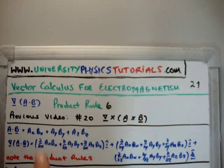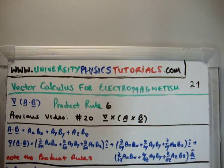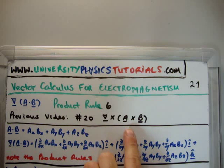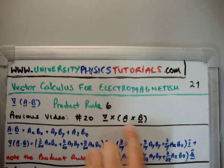I'd like to draw your attention to my website universityphysicstutorials.com. The previous video to this is number 20 where I got the curl of a vector field and the vector field was the result of the cross product between vectors A and B.